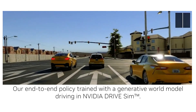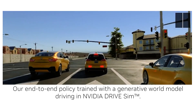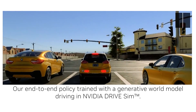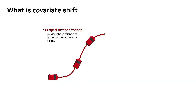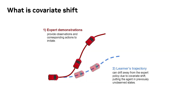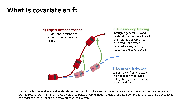Covariant shift is a problem in imitation learning, especially in sequential decision-making tasks like self-driving, where the states experienced by the learner diverge from those in the demonstrations, leading to a compounding of errors. Closed-loop training with a generative world model increases robustness to covariant shift by allowing the learner to visit those states outside of the expert demonstrations.